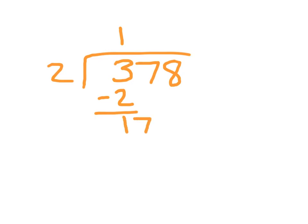We bring down the 7. 17 divided by 2 is 8 because 8 times 2 is 16. 17 minus 16 is 1, and there's still another digit to bring down the 8. 18 divided by 2 is 9 because 9 times 2 is 18, and 18 minus 18 is 0. So there is no remainder.